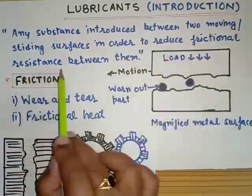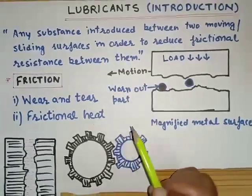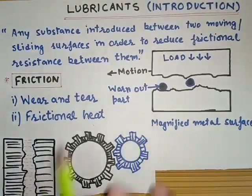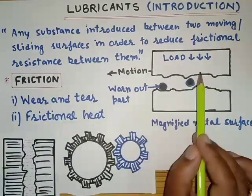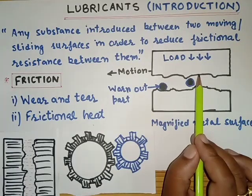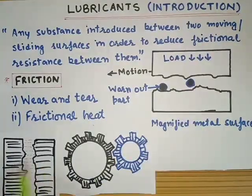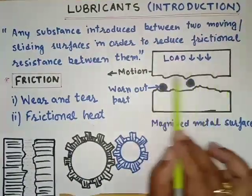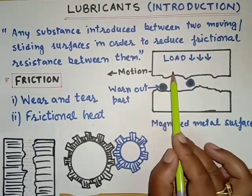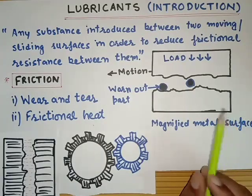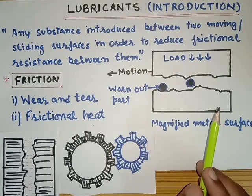Frictional resistance is generally known as friction. Friction is the force which resists the motion of two sliding surfaces. Suppose these are two sliding surfaces — the force which resists the motion of these two surfaces is known as friction. One reason for friction is the surface roughness of a metal.